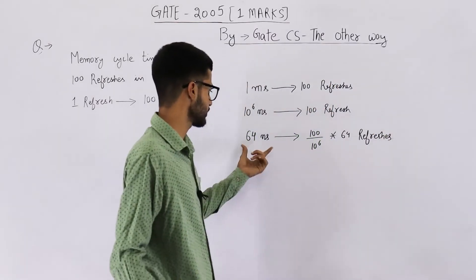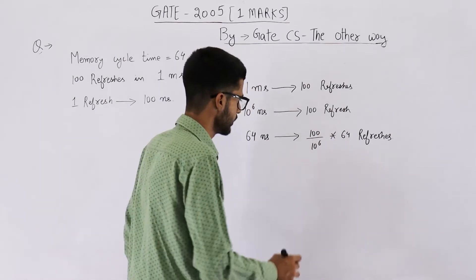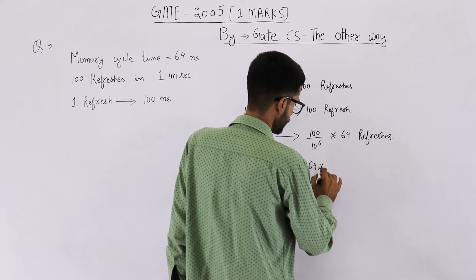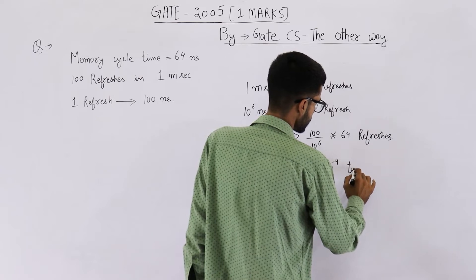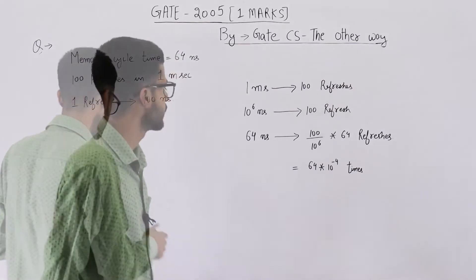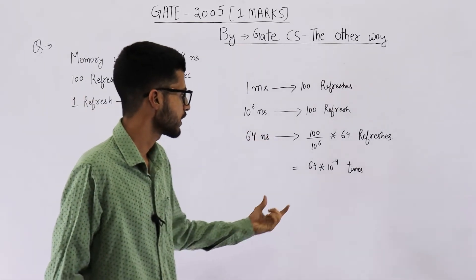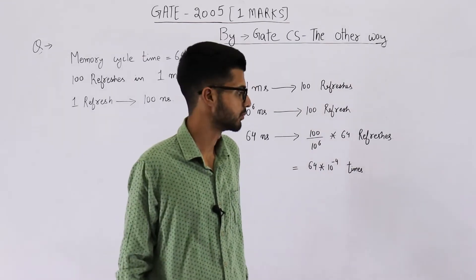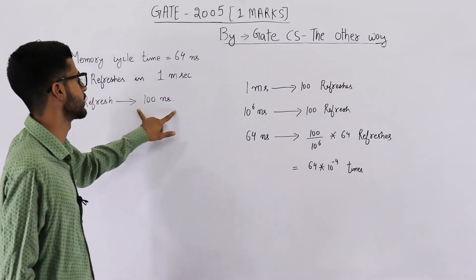So in 64 nanoseconds it needs to be refreshed 64 into 10 raised to the power minus 4 times — that many refreshes. Now, in 64 nanoseconds you refresh it for 64 into 10 raised to the power minus 4 times, and refreshing one time needs 100 nanoseconds.